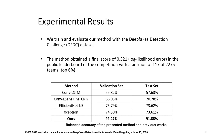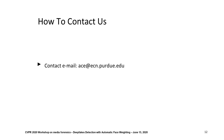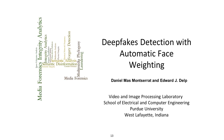Additionally, we obtain a score of 0.321 log likelihood error in the public leaderboard of the competition, which places us in position 117 of 2275 teams, which is within the top 6%. If you have any questions about this presentation, please use the contact email. Thank you for your attention.